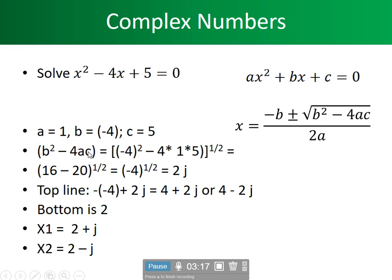What we have inside the square root is b squared minus 4ac. We plug in b = -4 and square it, then subtract 4 times a (which is 1) times c (which is 5). Negative 4 squared gives 16; 4 times 1 times 5 gives 20. Since 20 is greater than 16, we have a minus 4 under the square root. Because we have a negative number under the square root, we use j (some places use i), which stands for the square root of negative 1.